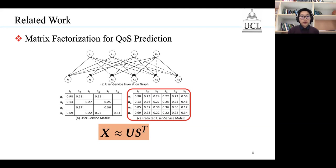And then, we use US transpose to approximate X. Hopefully, US transpose should be as close to X as possible.